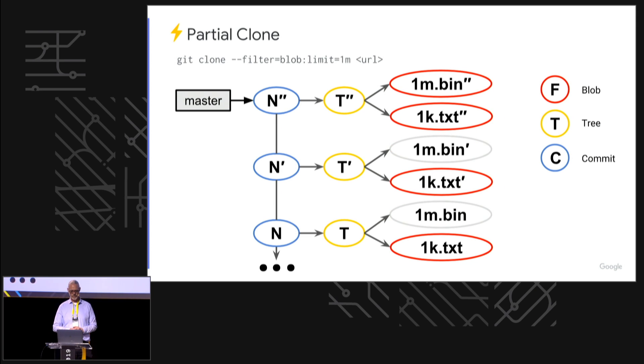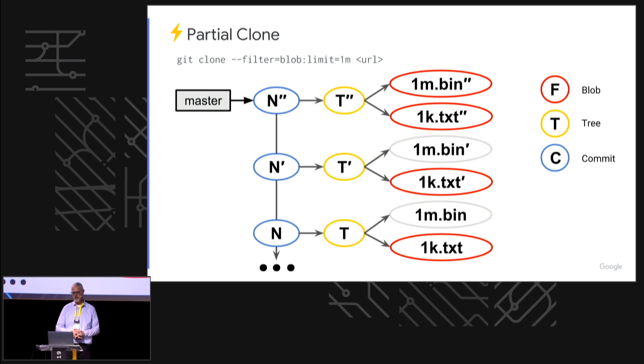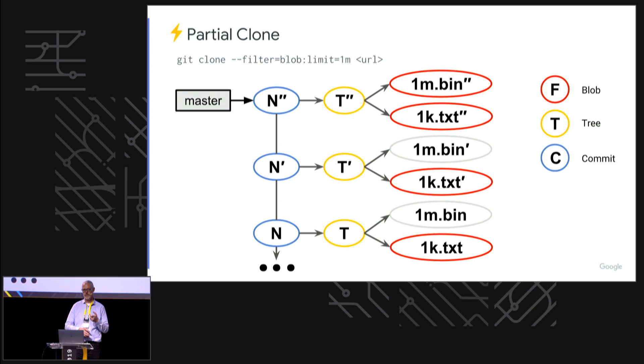In this command line we're cloning with the filter blob:limit=1megabyte. We now have a couple of gray ovals — those are the things not being downloaded. You may notice the 1M bin-prime-prime is being downloaded, because a clone is actually two operations. The first is a fetch, which fetches all content into the .git directory. The second is checking out a branch — by default master. So the initial fetch did not fetch that 1M .bin-prime-prime file; it was the checkout that needed to populate the work tree that fetched it as a second transaction.